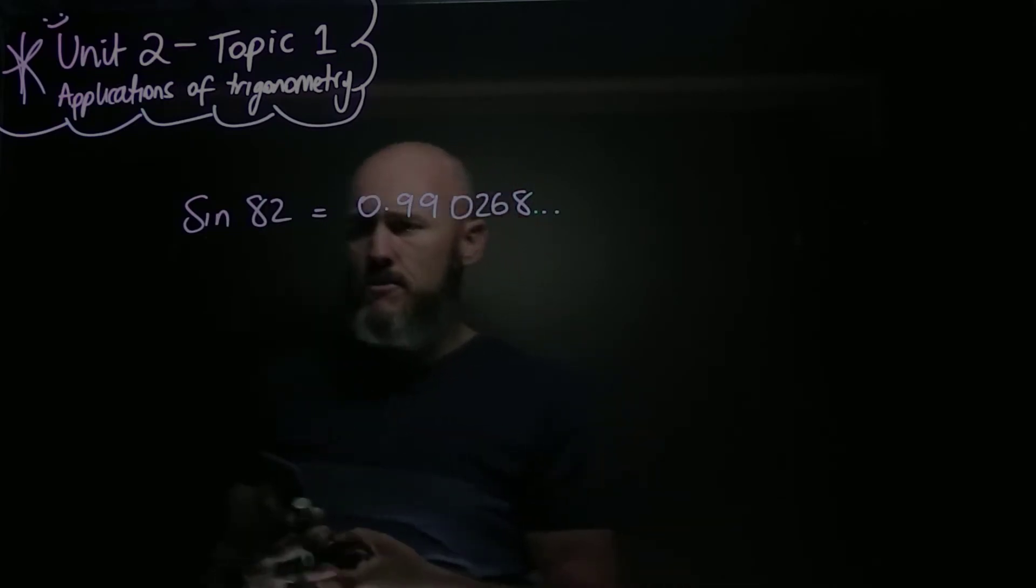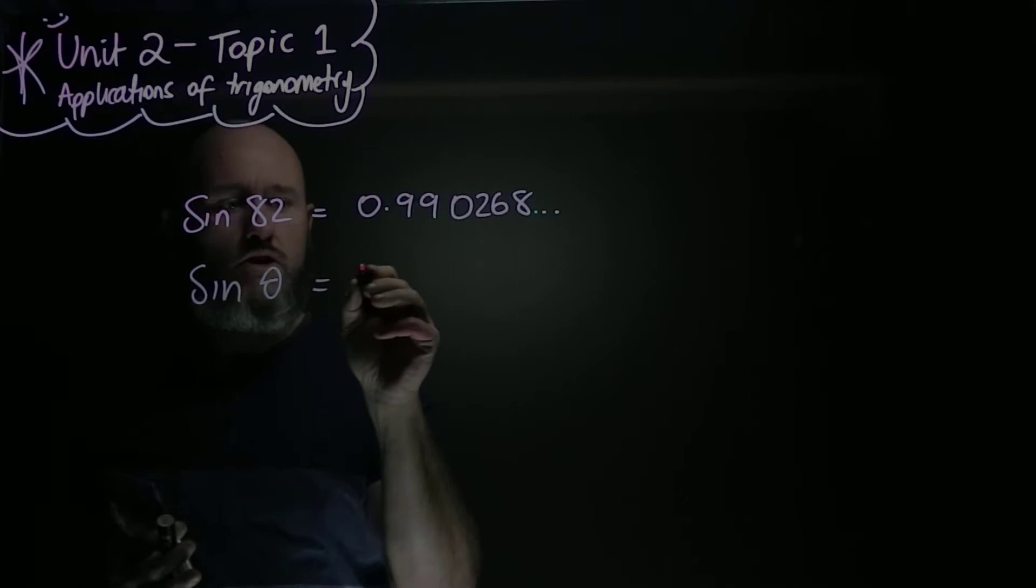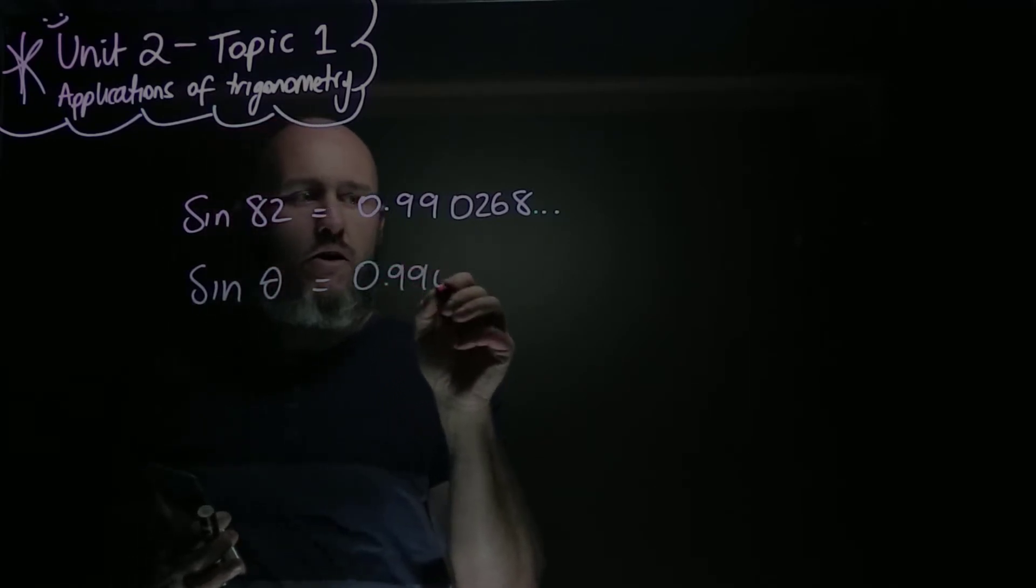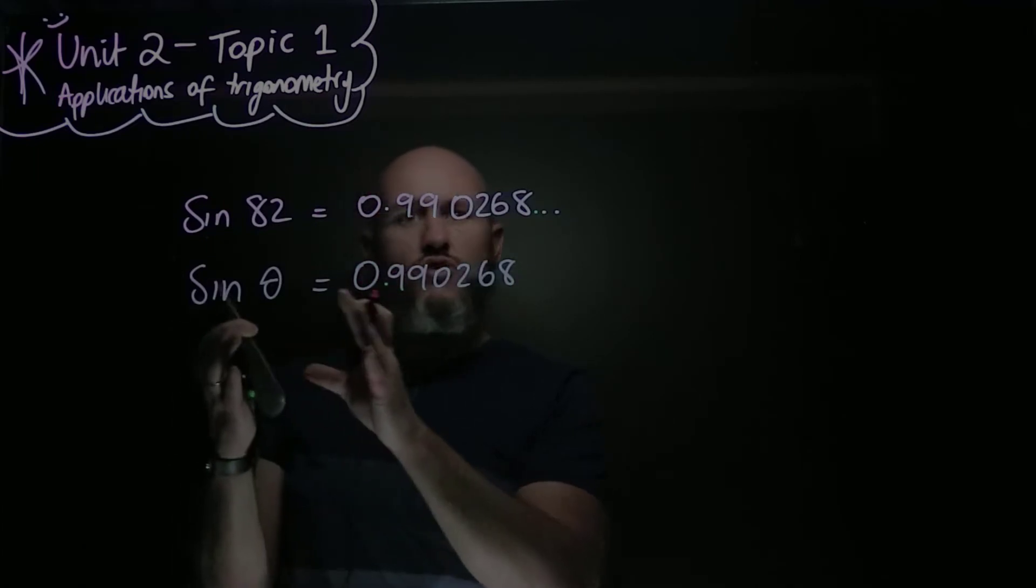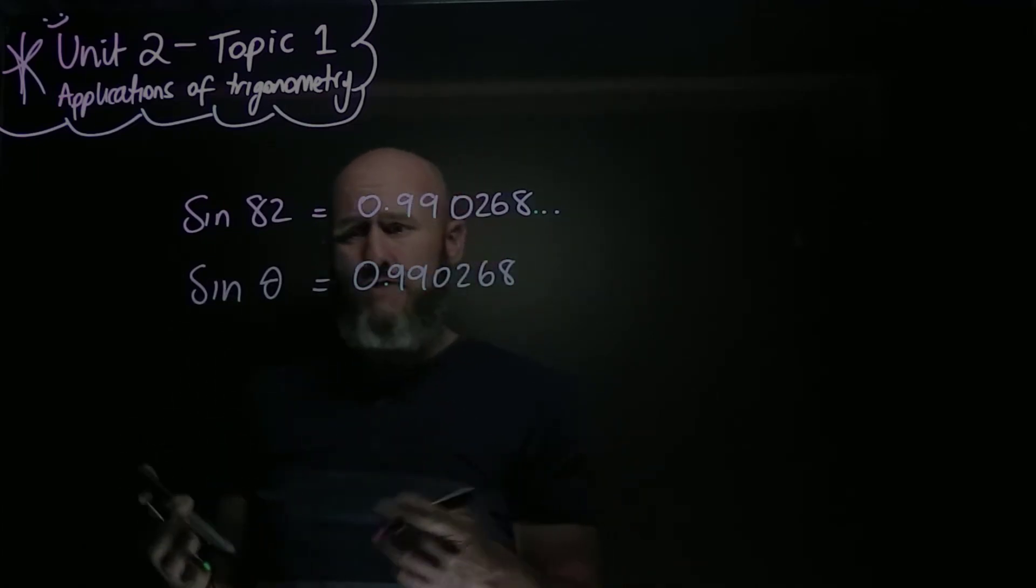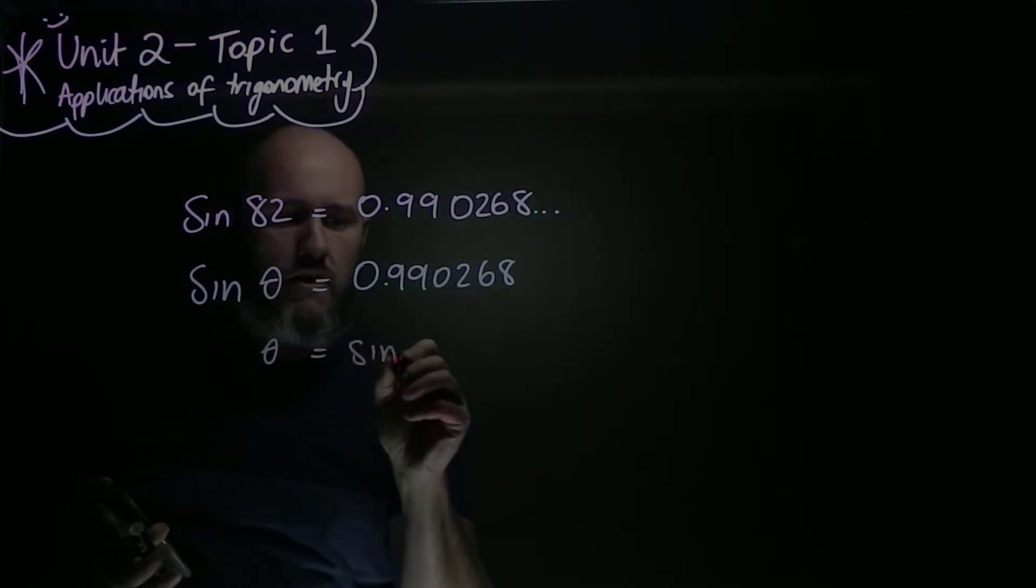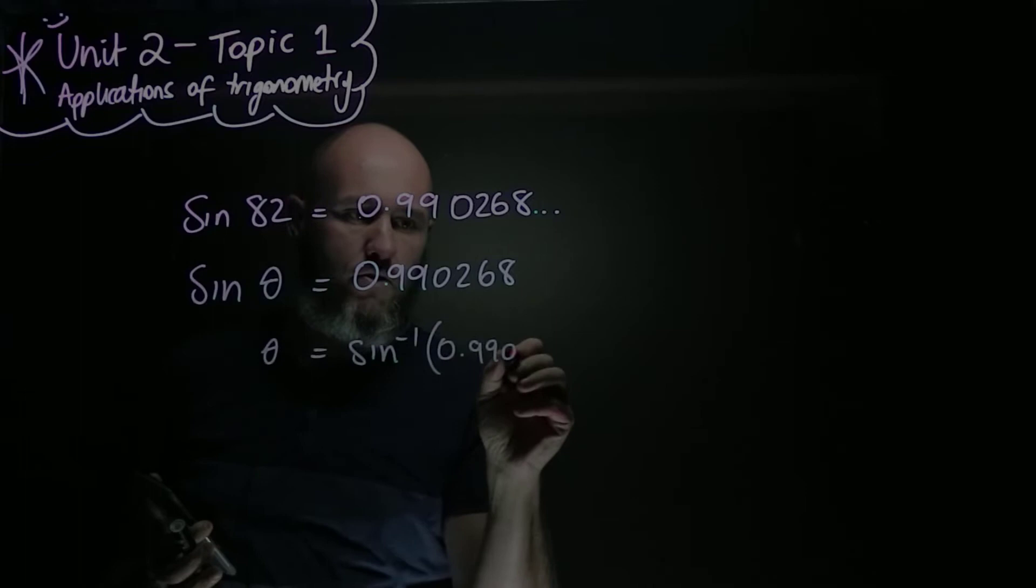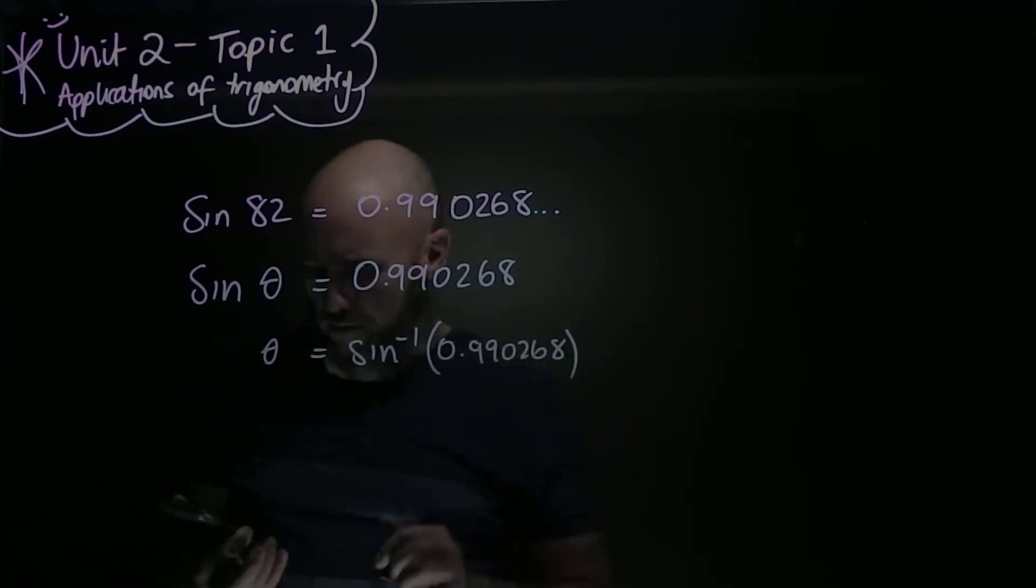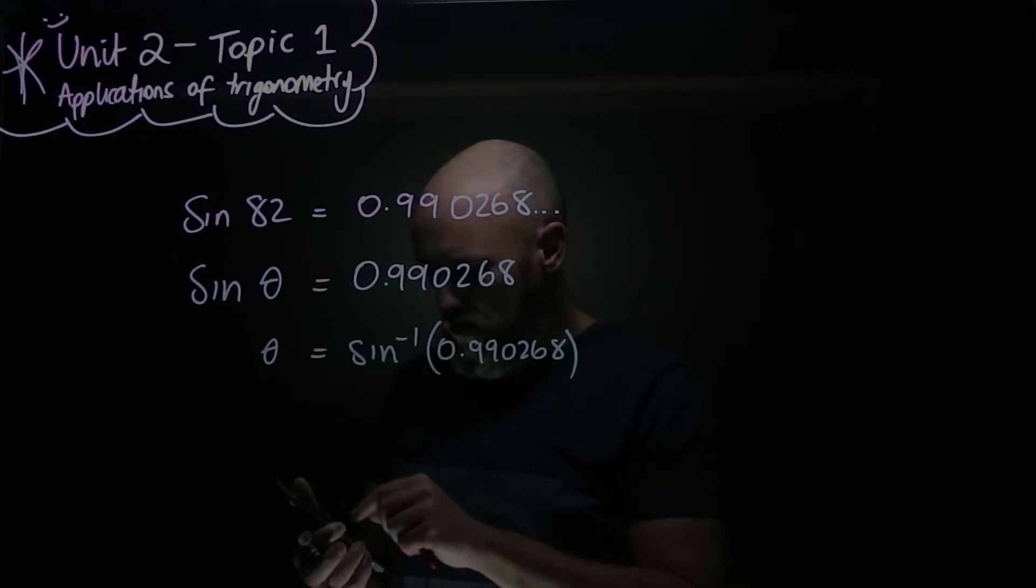So, what happens if I'm told that sine of some angle is equal to 0.990268? How do I reverse this operation sine? And you should have seen this before, but that comes out as theta is equal to sine inverse of 0.990268. And that can be found in your calculator by doing shift sine of that number.